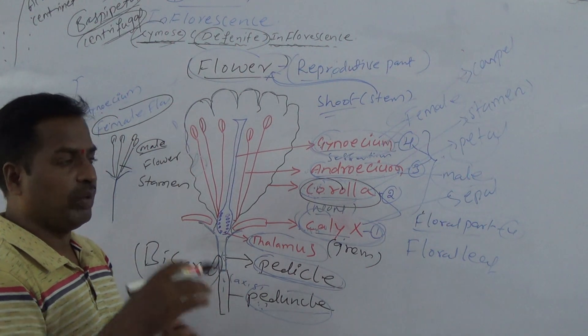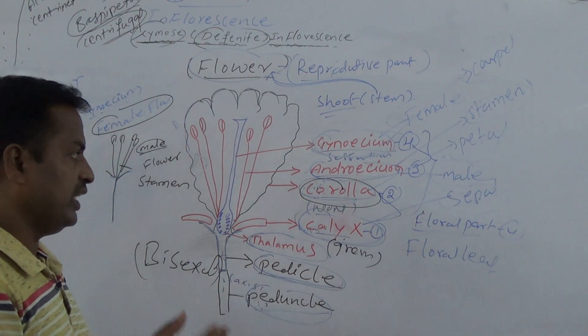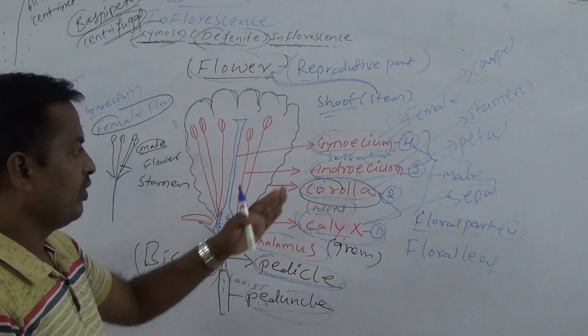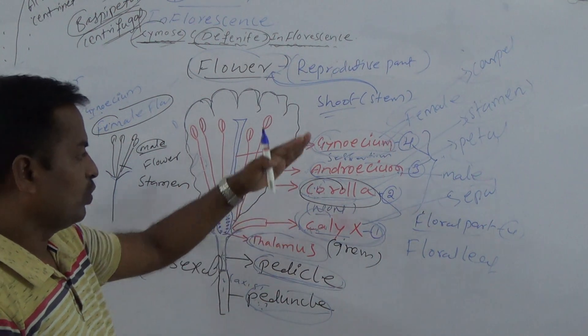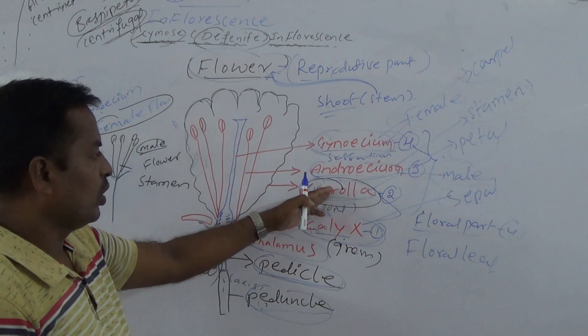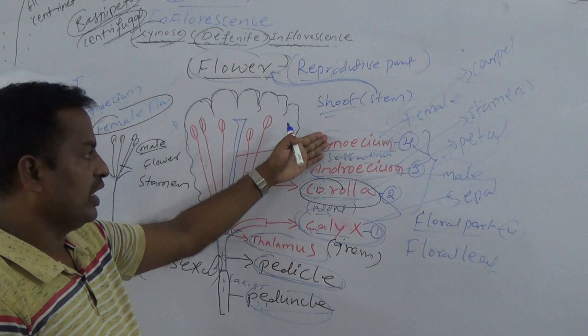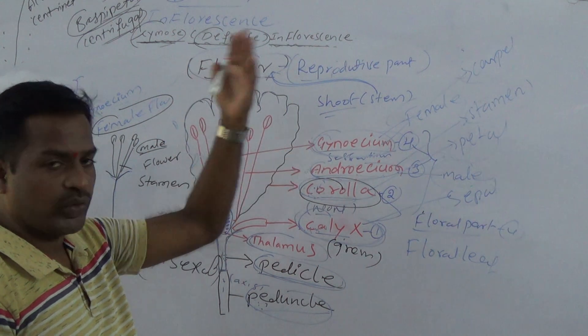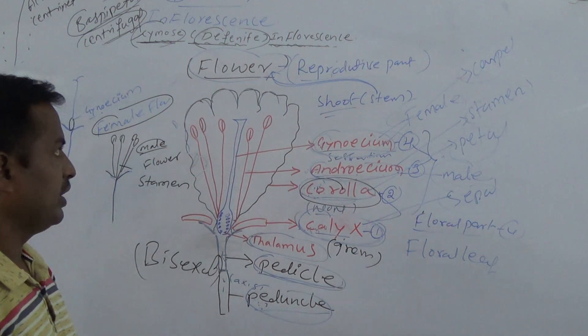We can discuss another topic — sexual reproduction in plants — including what is monoecious and what is dioecious. We will discuss in another class. What is Corolla? What is Androecium? What is Gynoecium? Then the topic is completed.